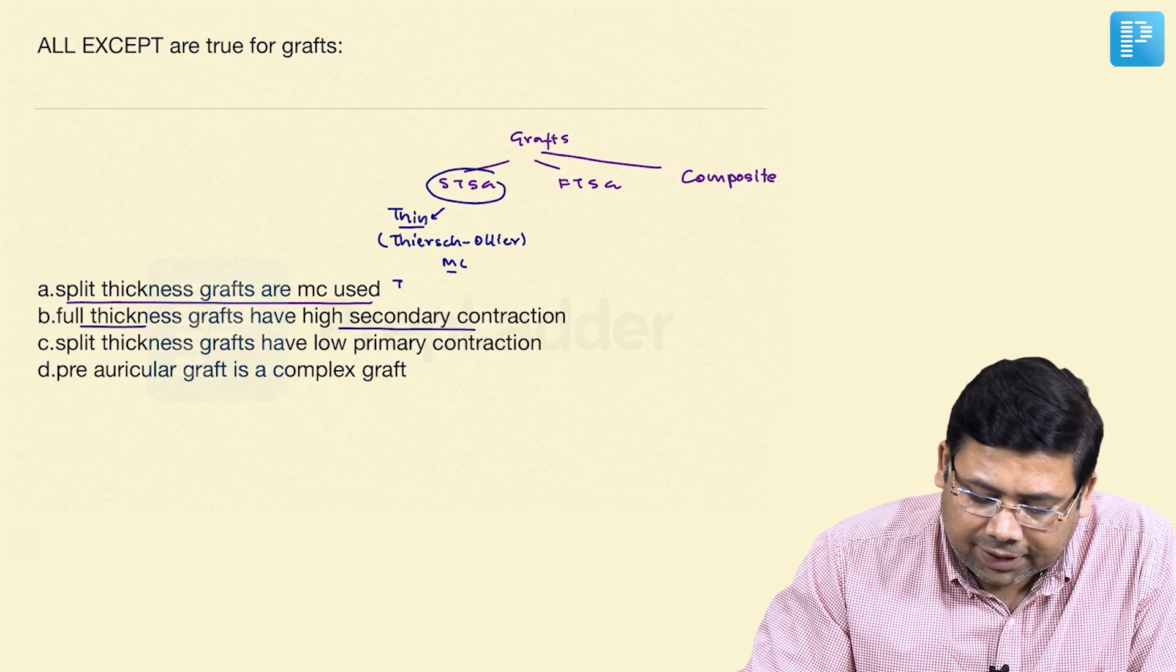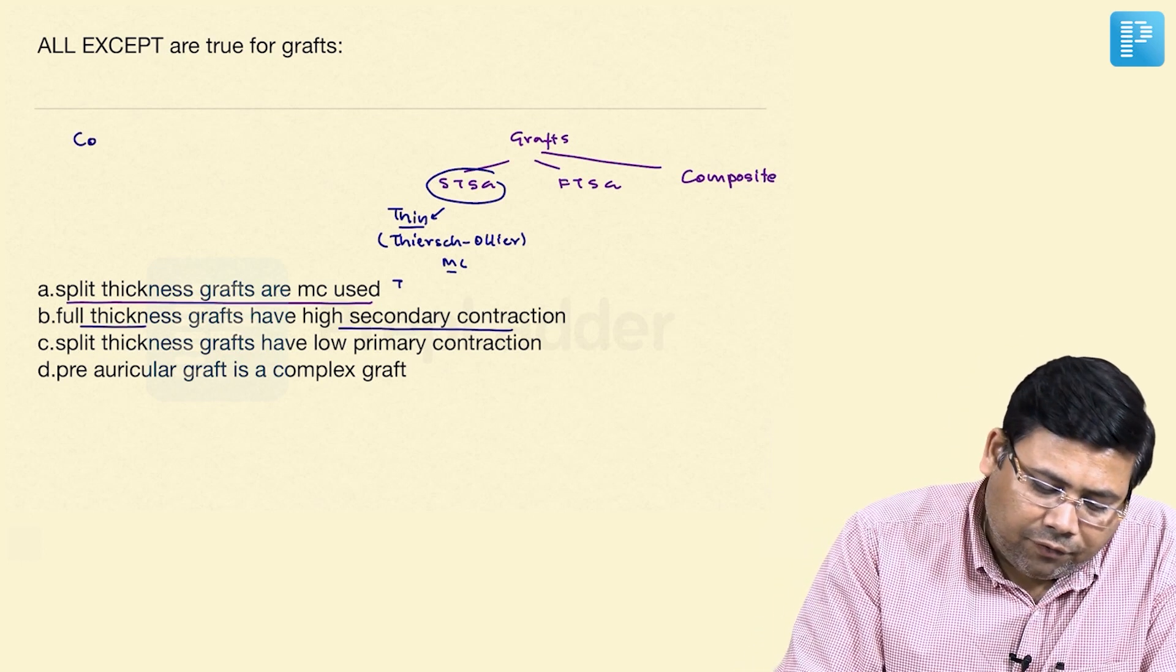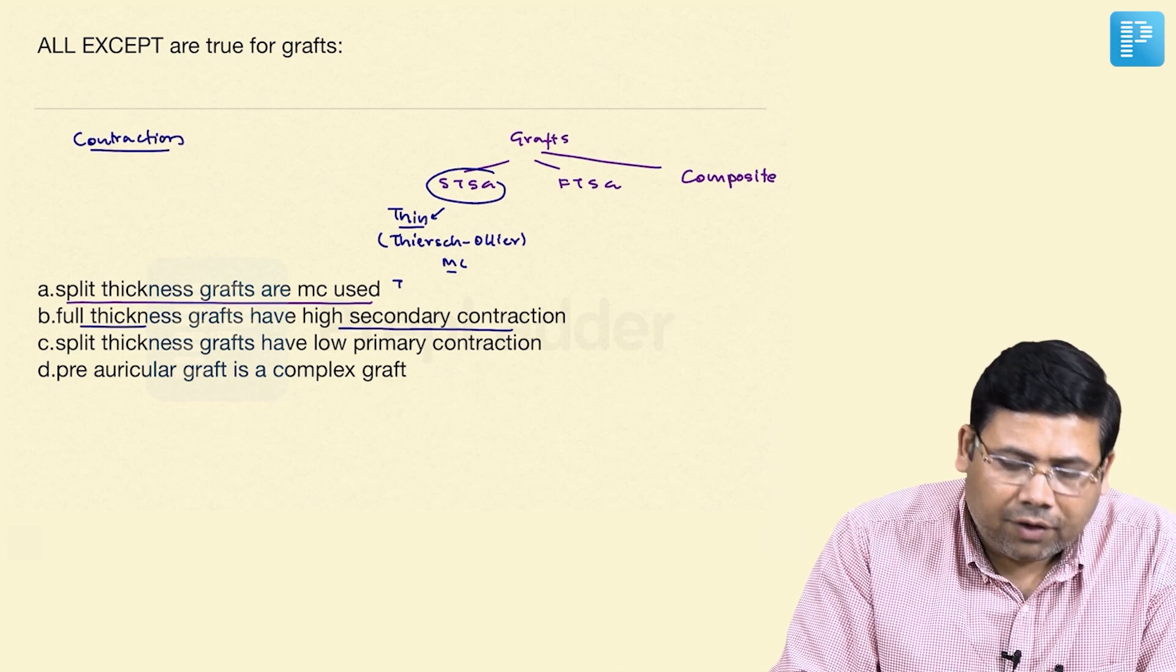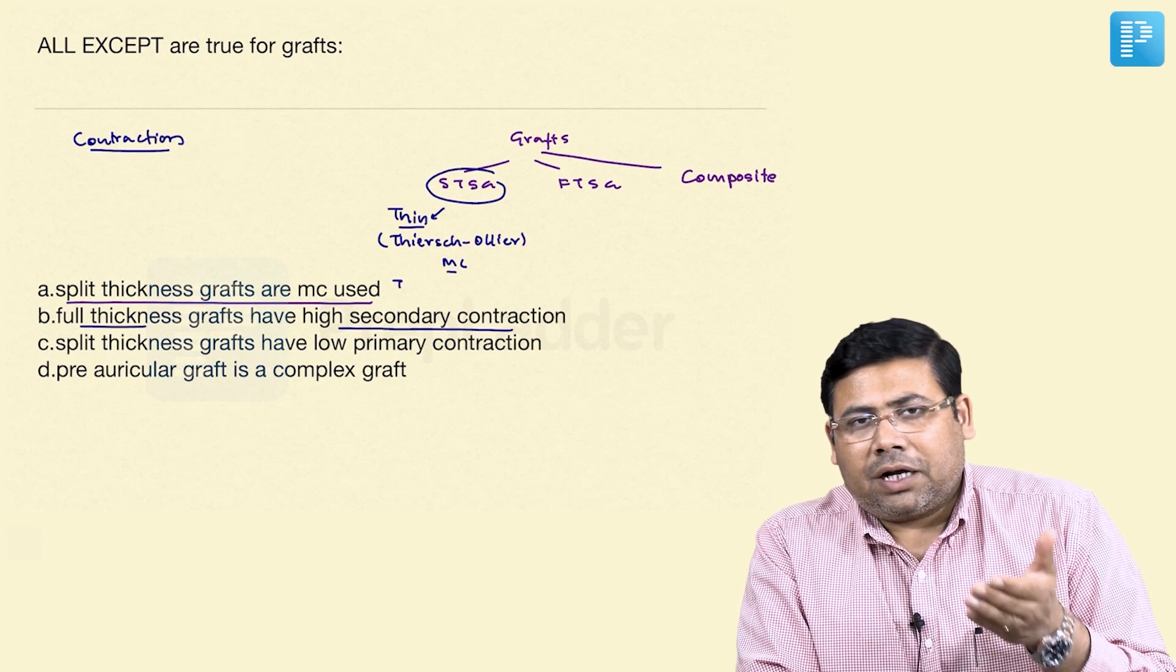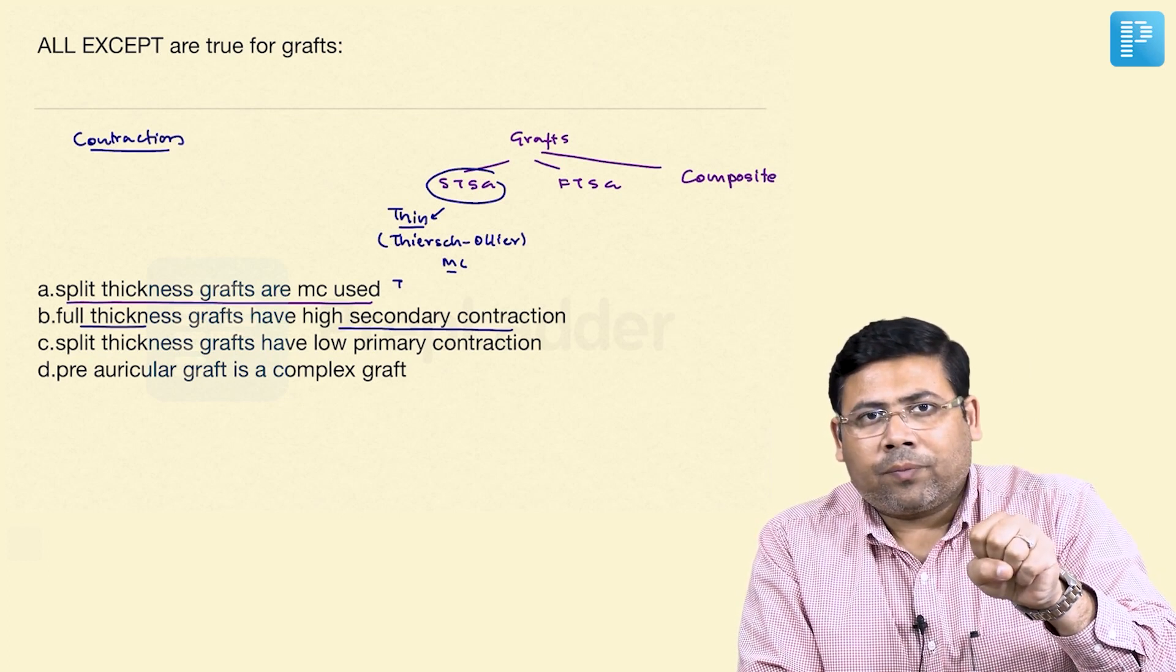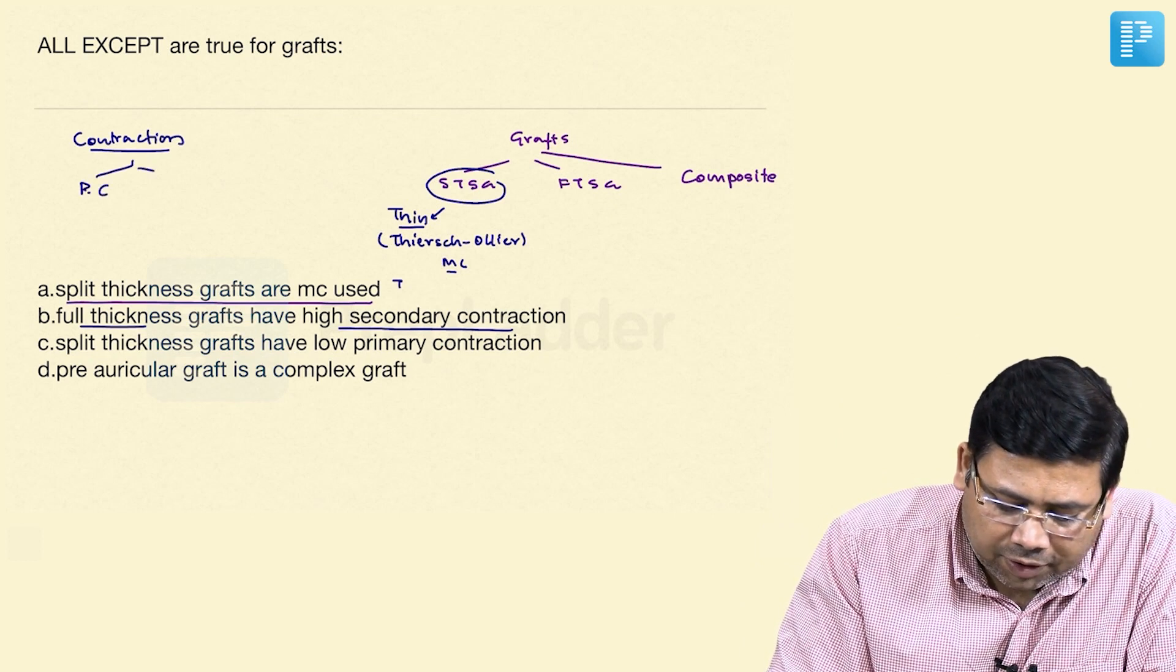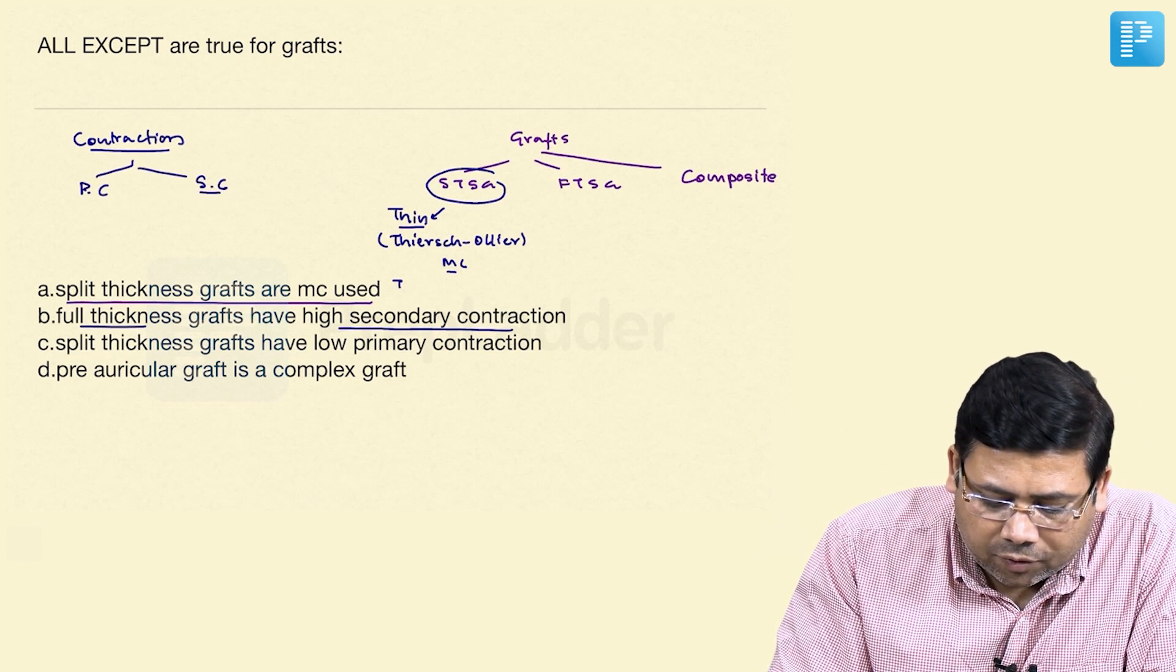The second statement is: full thickness grafts have high secondary contraction. When we talk about contraction of the graft, whenever we harvest a graft, it will have some elastic recoil. This is known as contraction. There are two types: primary contraction and secondary contraction.